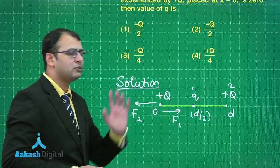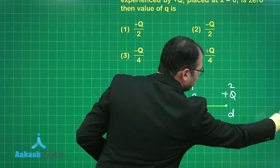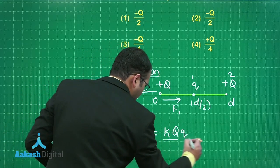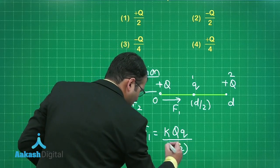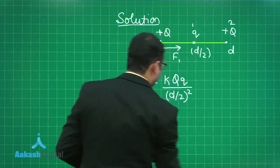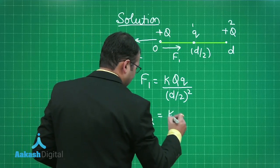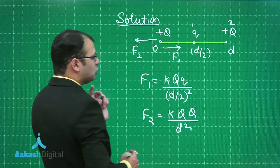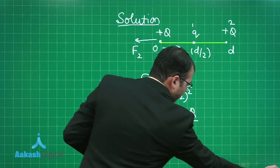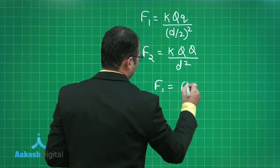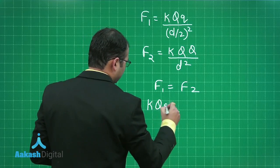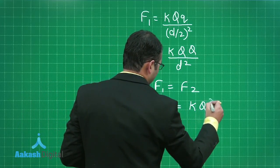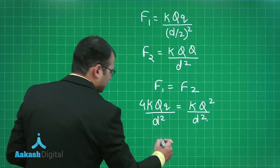If you just write down the values, you will get F₁ would be equal to kQq upon (d/2)² when you talk about F₂ it would be kQQ upon d². Both the forces should be equal in magnitude, so I'm saying that F₁ is equal to F₂. kQq upon d², this 4 will go up, this should be kQ² upon d².